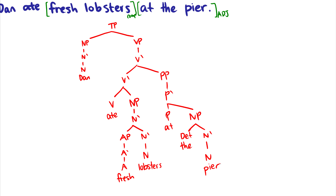So 'Dan ate fresh lobsters at the pier.' The adjunct is daughter of a V-bar, sister to a V-bar. The complement is daughter of a V-bar, sister of a V. These are the key differences between adjuncts and complements.